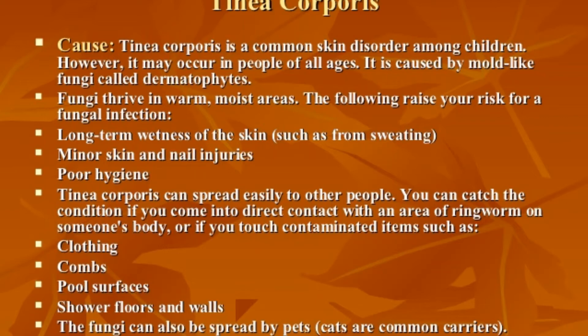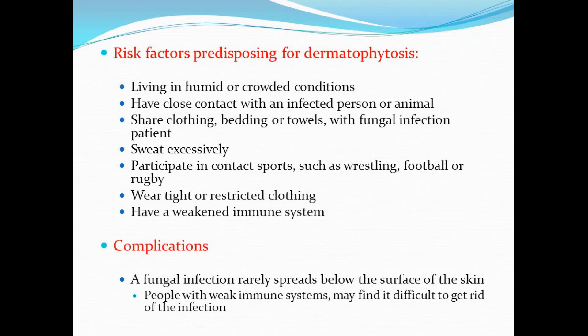Another mode of transmission is object-to-human: it is possible for ringworm to spread by contact with objects or surfaces that an infected person or animal has recently touched or rubbed against, such as clothing, towels, bedding and linens, and combs and brushes. In rare cases, ringworm can be spread to humans by contact with infected soil. Infection would most likely occur only from prolonged contact with highly infected soil.